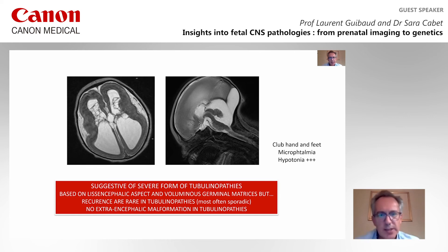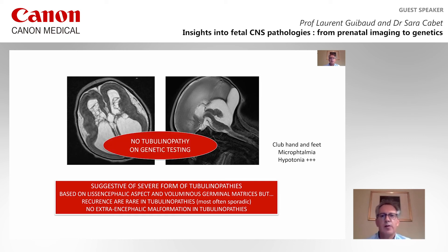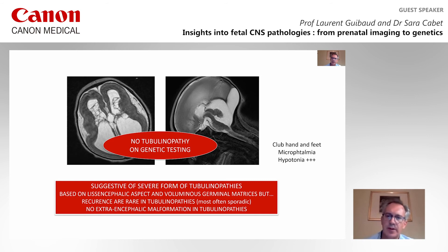These cases, as well as the Balthauser case, were suggestive of severe forms of tubulinopathies based on the lissencephalic aspects and the voluminous germinal matrix. However, recurrences are rare in tubulinopathies and they are most often sporadic, and there are no extra-encephalic malformations in tubulinopathies. In our three cases, there are associated extra-encephalic malformations. Moreover, tubulinopathies were tested and there is no tubulinopathy on genetic testing.